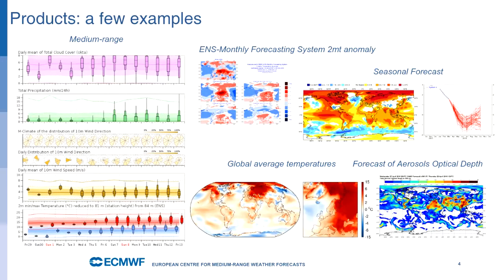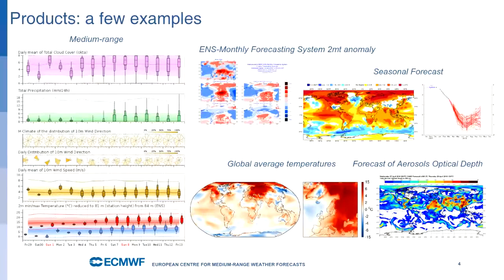We have a monthly system, as you can see here, which Peter kindly introduced. Then the seasonal system — you can see the El Niño forecast here in the right-hand plume. And then there are more forecast products for the European Commission and the European Union: global average temperatures over the globe and over Europe. We're also part of the Copernicus monitoring service, which you can see in the bottom right-hand side.